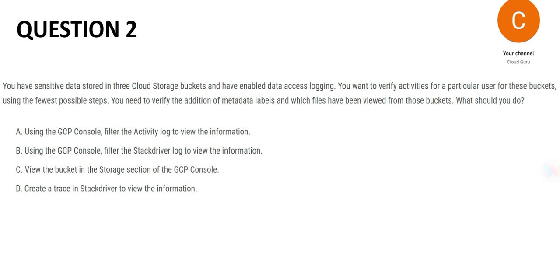That eliminates B and D. Now for C — view the bucket in the storage section of the GCP console. Imagine the security guard in your apartment complex has a register with logs — information of each person, when they entered, when they left, their name, everything. But here, option C is telling you to go to a different building instead of checking the log. That makes no sense. That is why C is not the answer. So B, C, and D have been eliminated, and A is the answer for question 2.